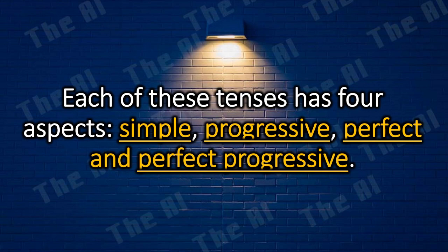Each of these tenses has four aspects: simple, progressive, perfect, and perfect progressive.